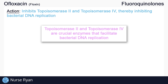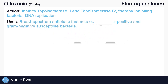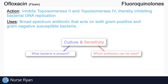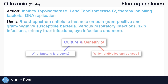What type of bacteria can fluoroquinolones like ofloxacin work on? Ofloxacin is a broad-spectrum antibiotic, which means it can act on a wide variety of bacterial infections. This includes both gram-positive and gram-negative susceptible bacteria. A culture and sensitivity test should be performed — the culture test identifies what bacteria is present, and the sensitivity test indicates which antibiotics will likely work best. Ofloxacin can be used in various respiratory infections, skin infections, urinary tract infections, eye infections, and more.